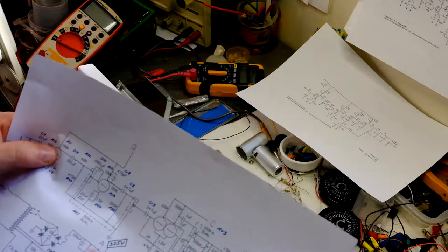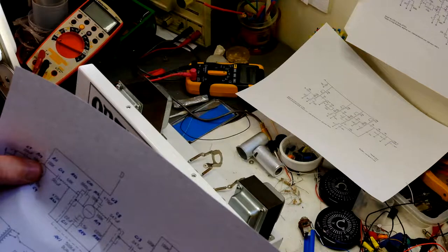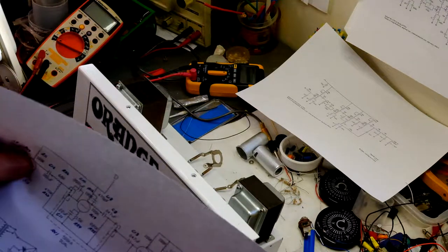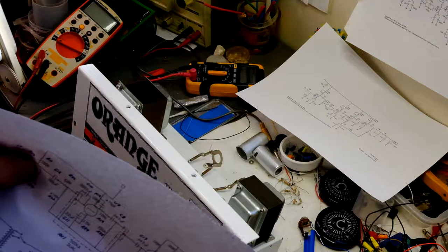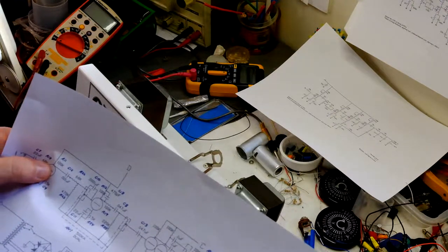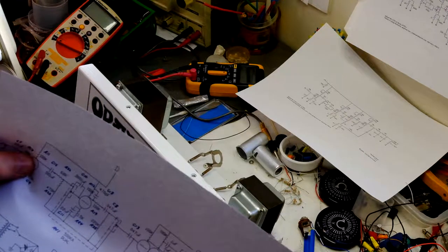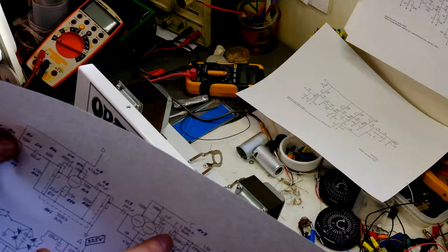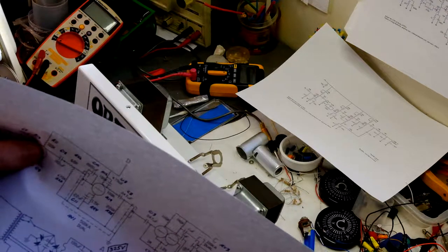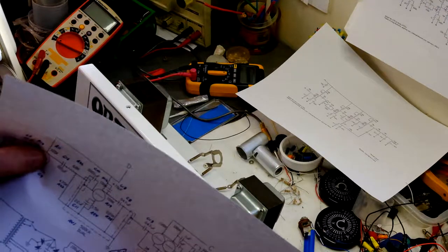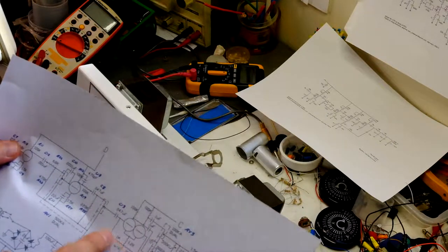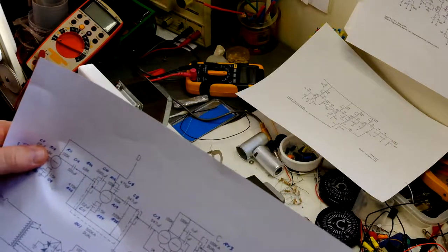And on the output we've got 0.1, which is huge compared to the 22 nanofarad on the Marshall. So, clean but with... What this does is it doesn't restrict the response of the output section, and it works in tandem with the volume controls. You'll notice they have a 500k volume control instead of a one meg on a Marshall. All of these things are factors—easy ways to change the sound.